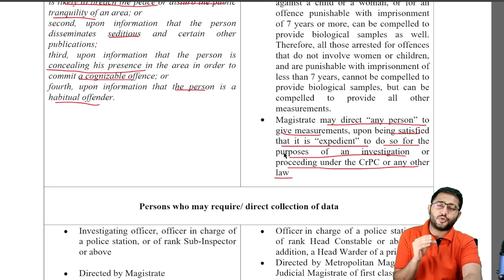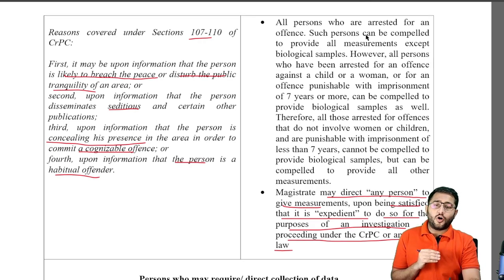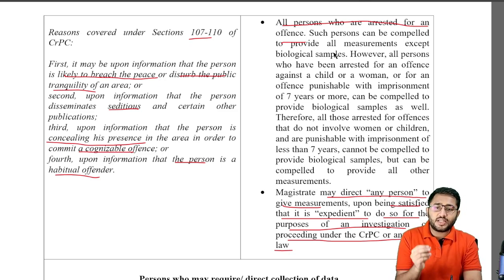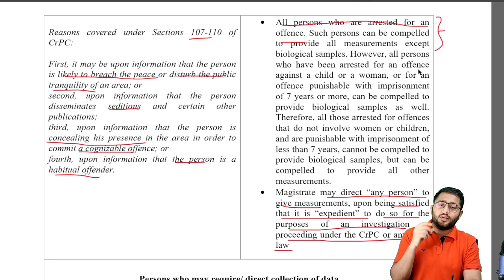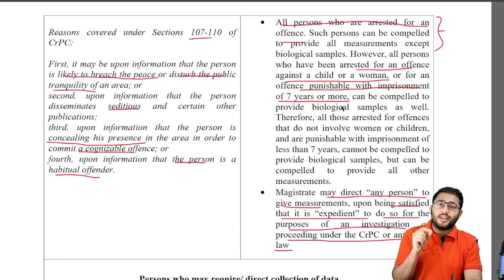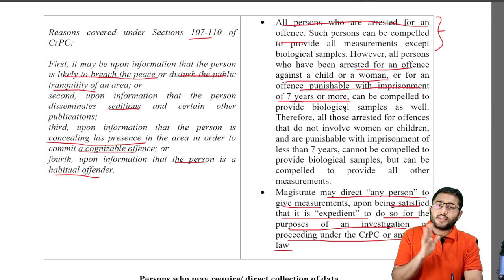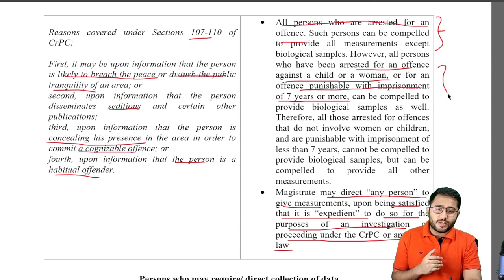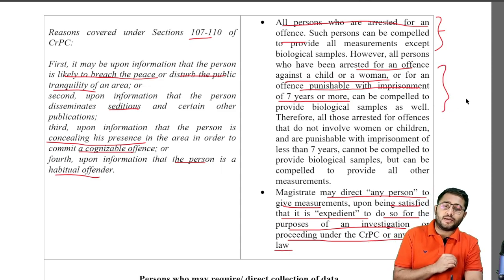There is one area where some discretion has been retained, and that is when it comes to biological samples. All persons who are arrested for an offence have to provide their measurements, but biological samples carry an additional condition. Every single person is going to be compelled to give their measurements, but persons who have committed offences punishable with imprisonment of seven years or more, or who have been arrested for an offence against a child or a woman, can even be compelled to give biological samples. For every other arrest, you must give all measurements other than biological samples.